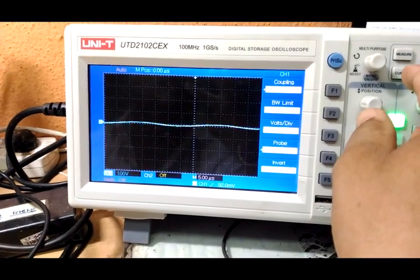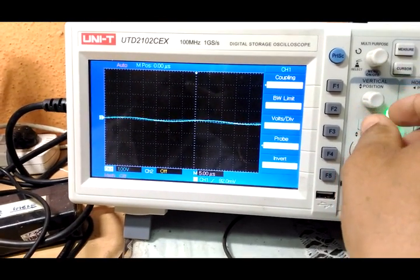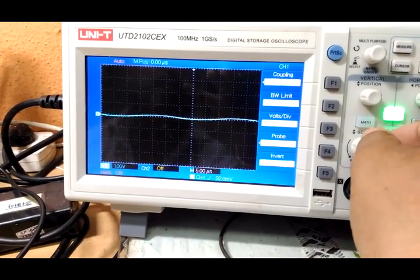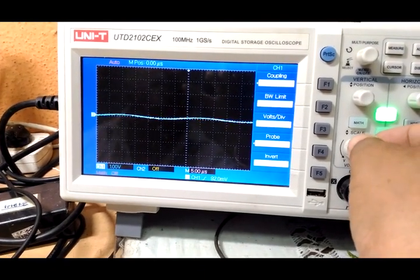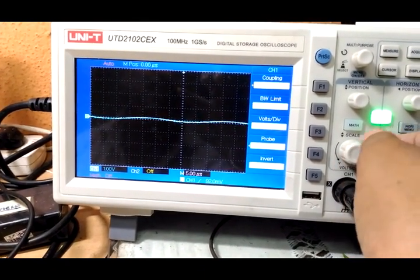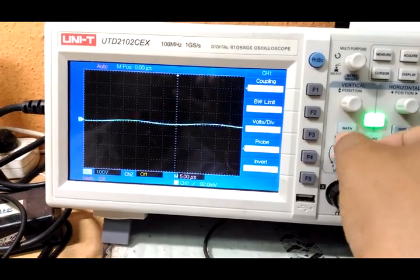See, we are getting slight variations in the reading. Now I will adjust this DSO, that is oscilloscope, so that we can clearly see a waveform.